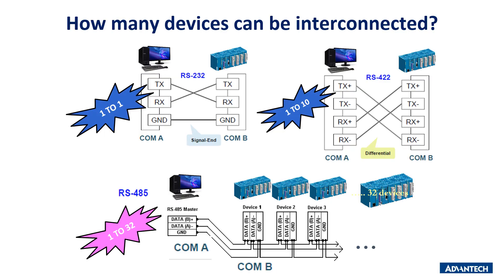How many devices can be interconnected on the same network? Each configuration has a limited number of devices. For RS-232 only one device can be connected to one host — inefficient for industrial environments with many machines. For RS-422, up to 10 devices can be connected to a host. RS-485 is the most popular because it supports 32 devices on a network.